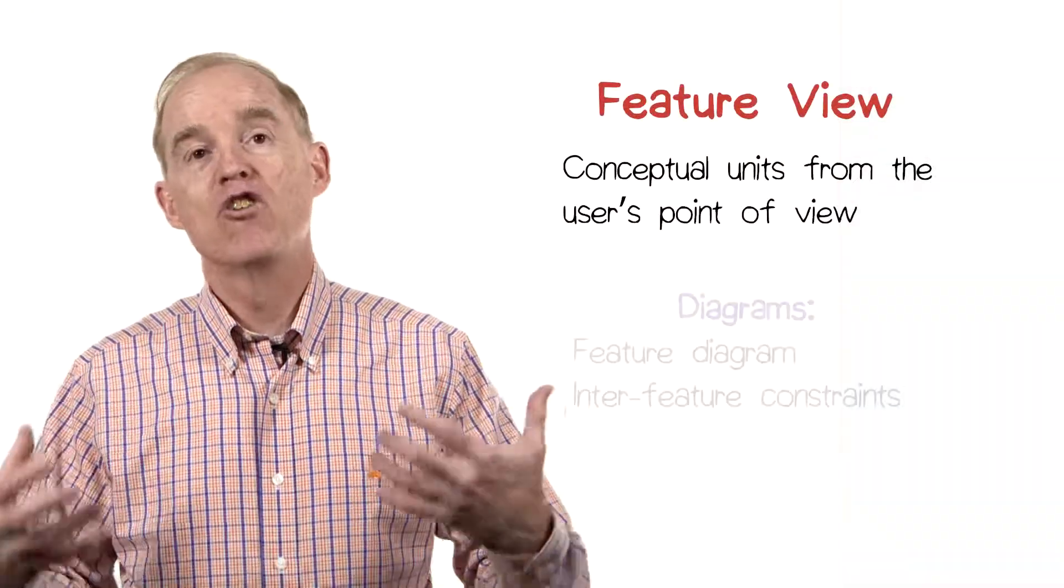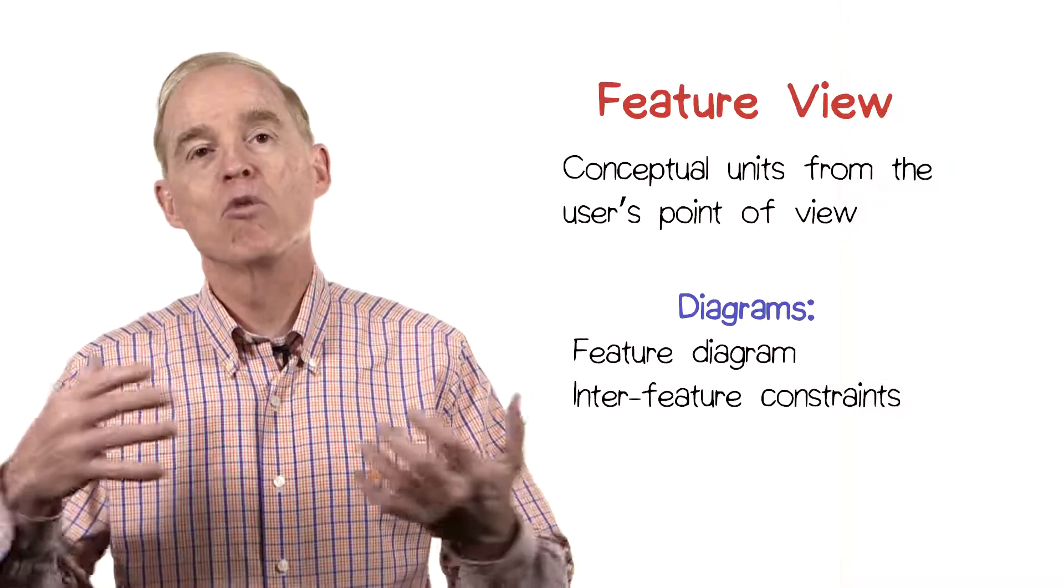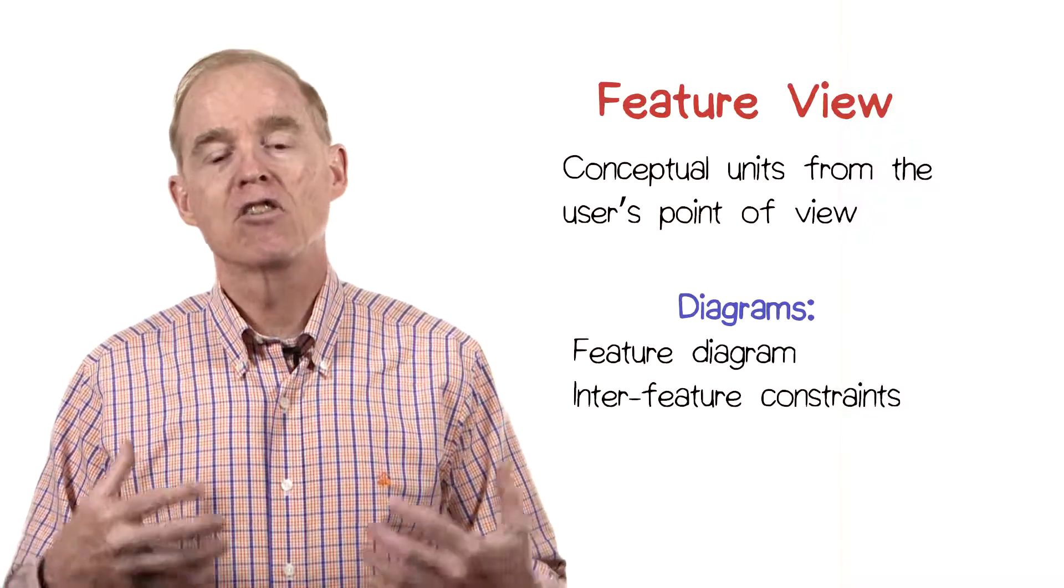Feature modeling is used for describing a set of features that a collection of related applications provide. There's a feature diagram, which I'm going to show you in a second, that conveys the set of possible features that might be configured into a particular product in that set of products.